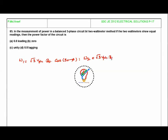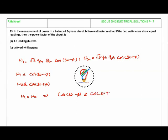And W2 will be root 3 times V phase times I phase times cos 30 plus phi. So W1 is proportional to cos 30 minus phi, W2 is proportional to cos 30 plus phi. When these two are equal, W1 equals W2, means cos 30 minus phi equals cos 30 plus phi.